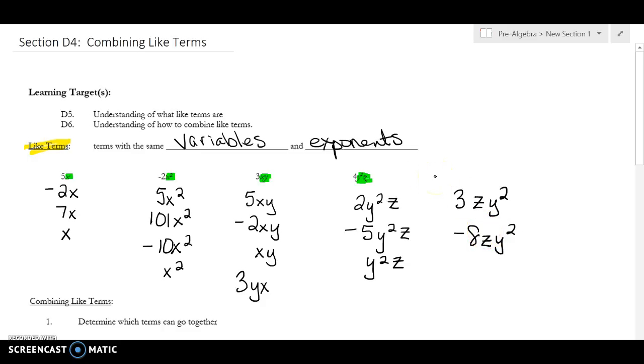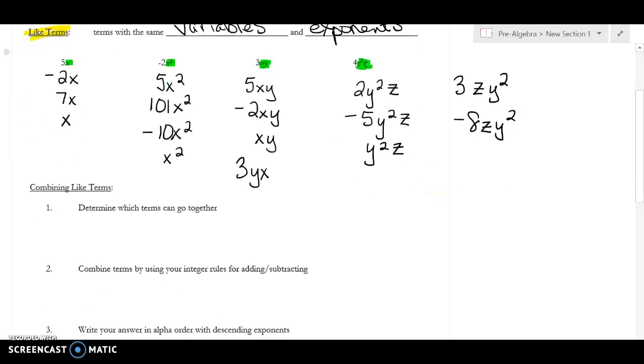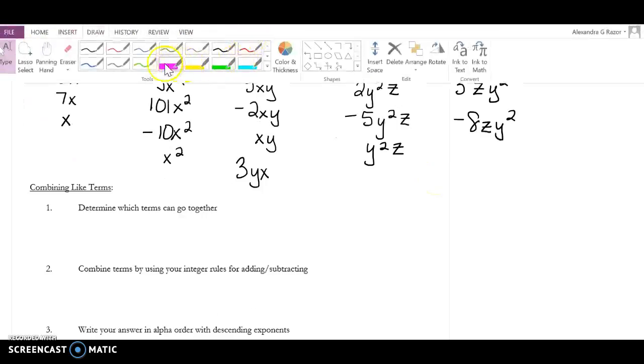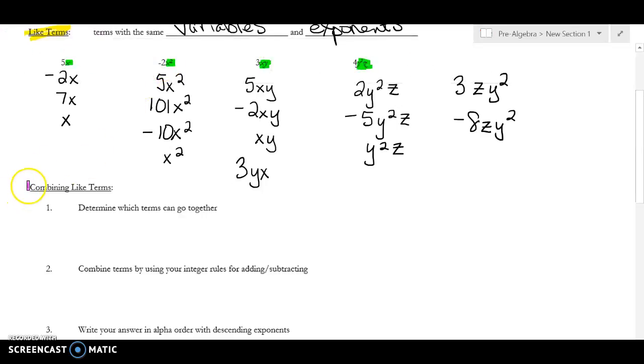Now what we have to do is know what you can do with like terms. And so there's some processes here, some steps that will help us combine like terms. So the first thing you have to do is decide what can go together. So I'm going to give you a problem.